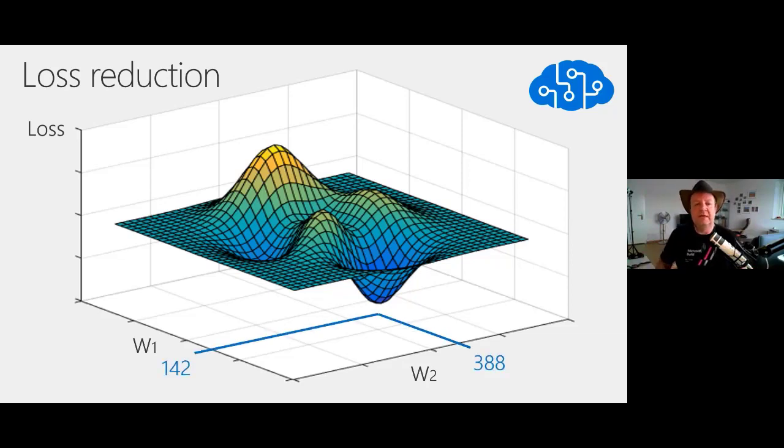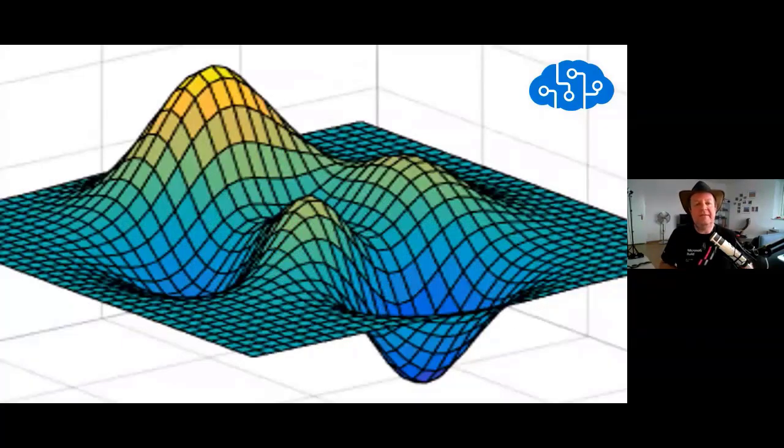Here in that graph it could be, for example, 142, 388. So now if we have the possibility to try and to measure the error for each value of W1 and W2, then it means that we can do something like that.